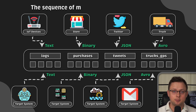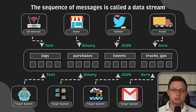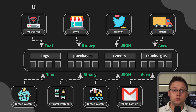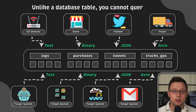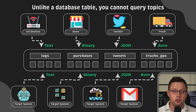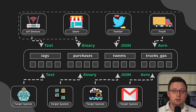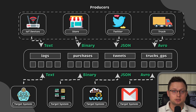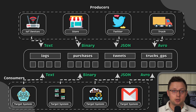The sequence of the messages in a Kafka topic is called a data stream. This is why Kafka is called a data streaming platform, because you work with data streams. You cannot query topics — while topics are similar to a database table, you cannot query them. Instead, you add data to a Kafka topic using Kafka producers, and to read data from a topic, you use Kafka consumers.